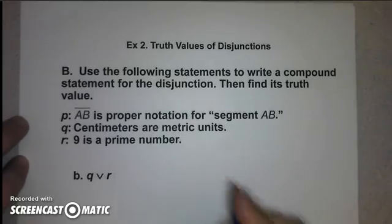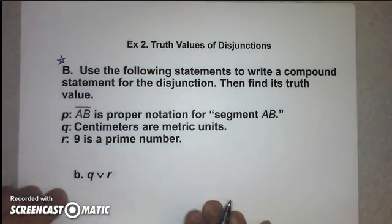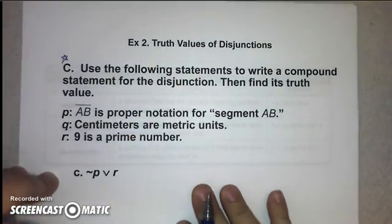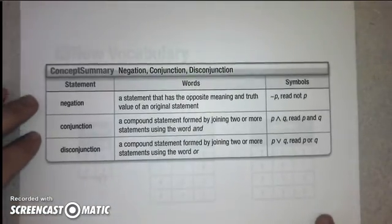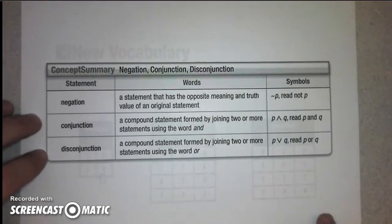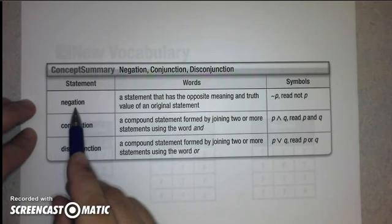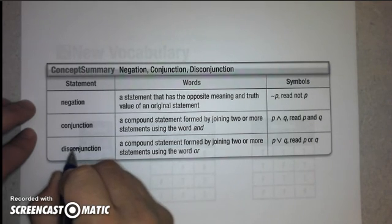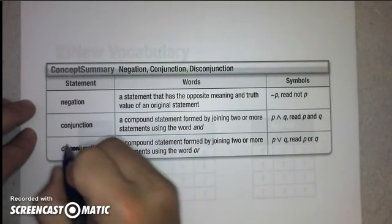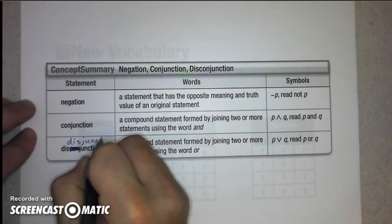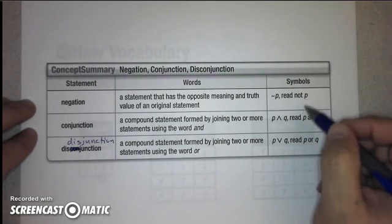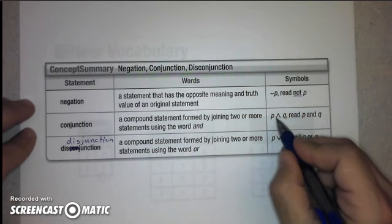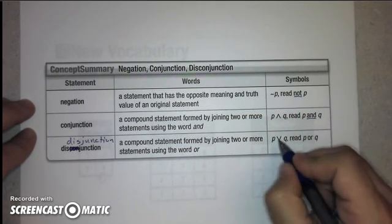We're going to come back to parts B and C of example two in class and skip those for now. Quickly, here is a diagram summarizing the meanings of these words and their symbols. The tilde symbol (~) is read as 'not.' The upward caret is read as 'and.' The V symbol is read as 'or.'